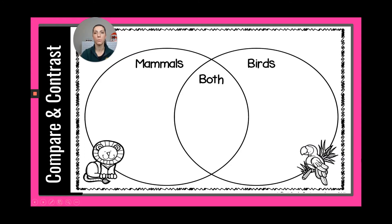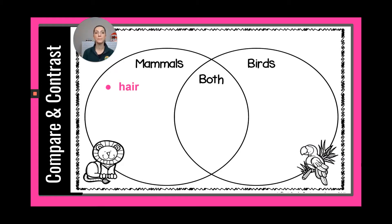Let's start by thinking about what they have on their bodies. What do mammals have on their bodies that birds do not? They have hair. Everybody please write 'hair' in the mammal circle.